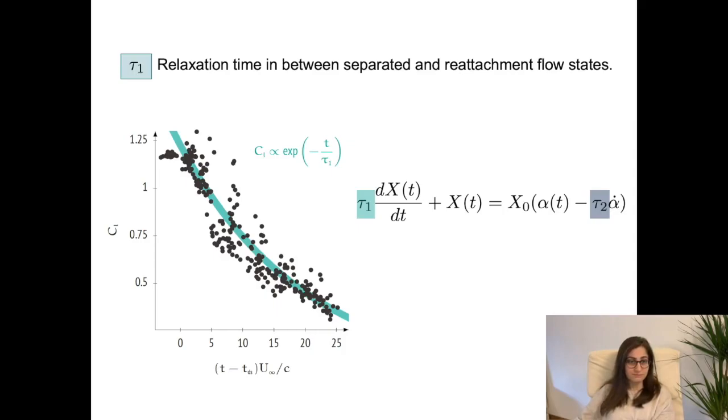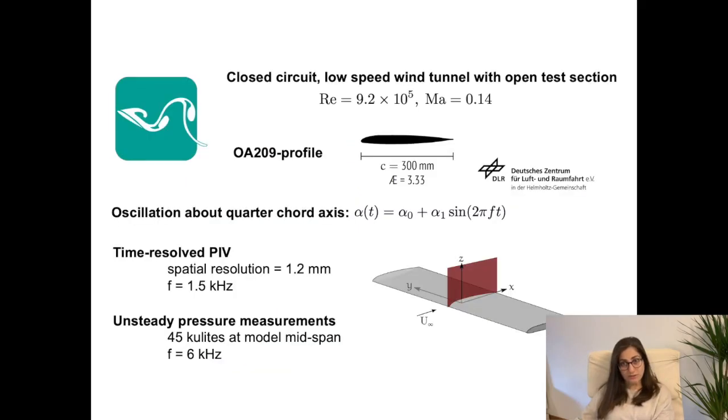That sounds great. By the way, how do you get your experimental data? So we use the closed-circuit low-speed wind tunnel with an open test section. You can see the Reynolds number and then the Mach number stated in here. We are using an ONERA airfoil. We have a pitching wing pitching about the quarter chord axis by using a sinusoidal motion. We have time-resolved PIV and then the pressure measurements that are taken at the mid-span of the airfoil.